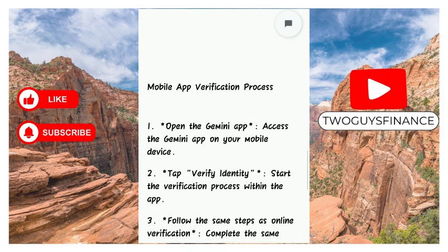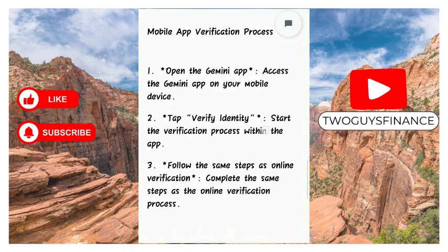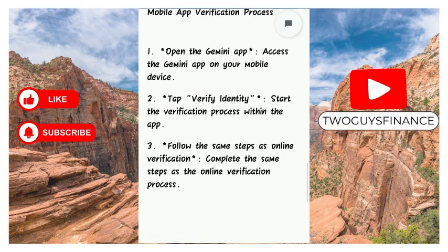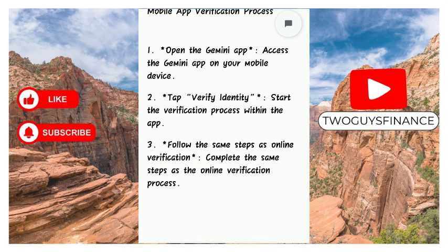For the mobile app verification process, start by accessing the Gemini app on your mobile device. Begin the verification process within the app by tapping on 'Verify Identity', then follow the same steps as the online verification process.